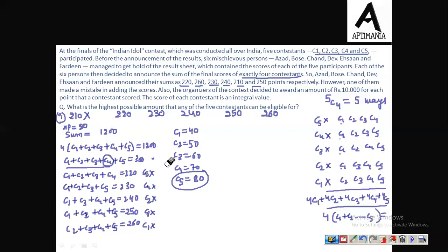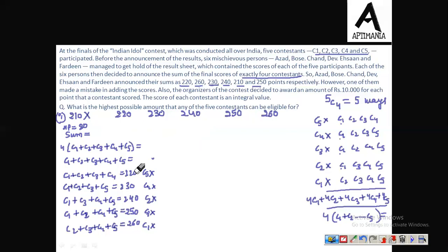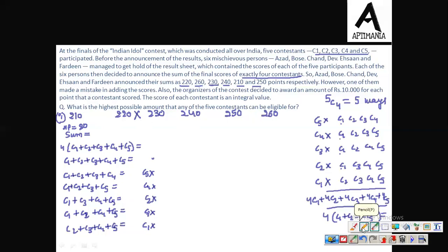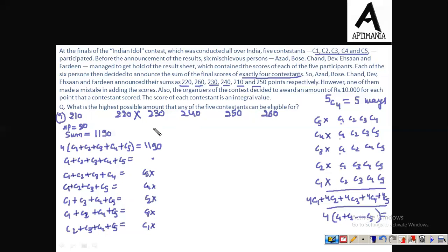Now Case 2: assume the wrong sum was 220. When 220 is removed, the total of the remaining 5 sums is 260 + 230 + 240 + 210 + 250 = 1190. Now see, 1190 is not a multiple of 4, and we are given that the score of each contestant is an integral value. So dividing 1190 by 4 gives a non-integer, which is not possible. Therefore 220 cannot be the wrong value — it has to be correct.